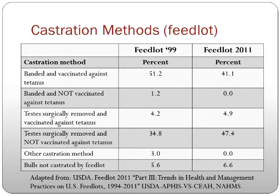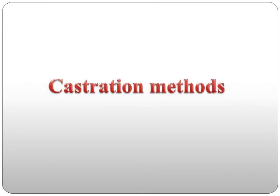This shows what the feedlot does once they receive bull calves — which method is preferred. There are two different surveys, one from 1999 and one from 2011. The big take-home is that banding accounts for 41% and surgical castration 47%. There is very little consensus among feed yards about what is the best method, and there's not a lot of data out there to really clarify that.